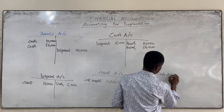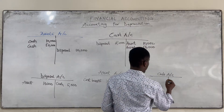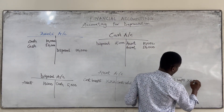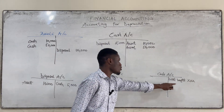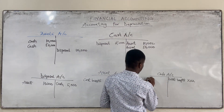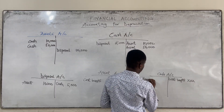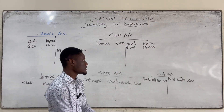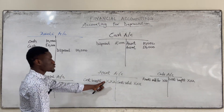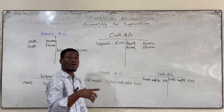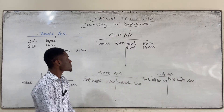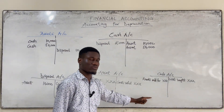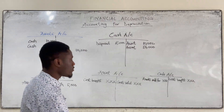When we sell that same asset, we are going to credit it with that same cost amount. This is the typical way of recording in the asset account. When we come to the cash account, the cost we bought the assets will be credited here, and the actual amount we sold the asset for will be debited here. The cost we bought the assets will be debited in the asset account; when we sell that asset, that same cost is credited in the asset account.